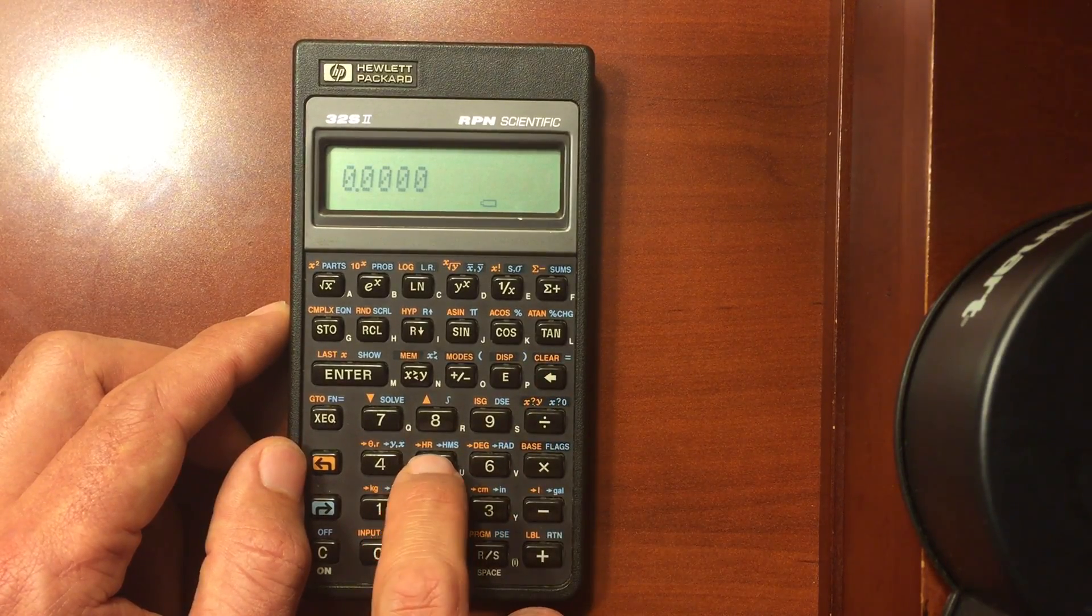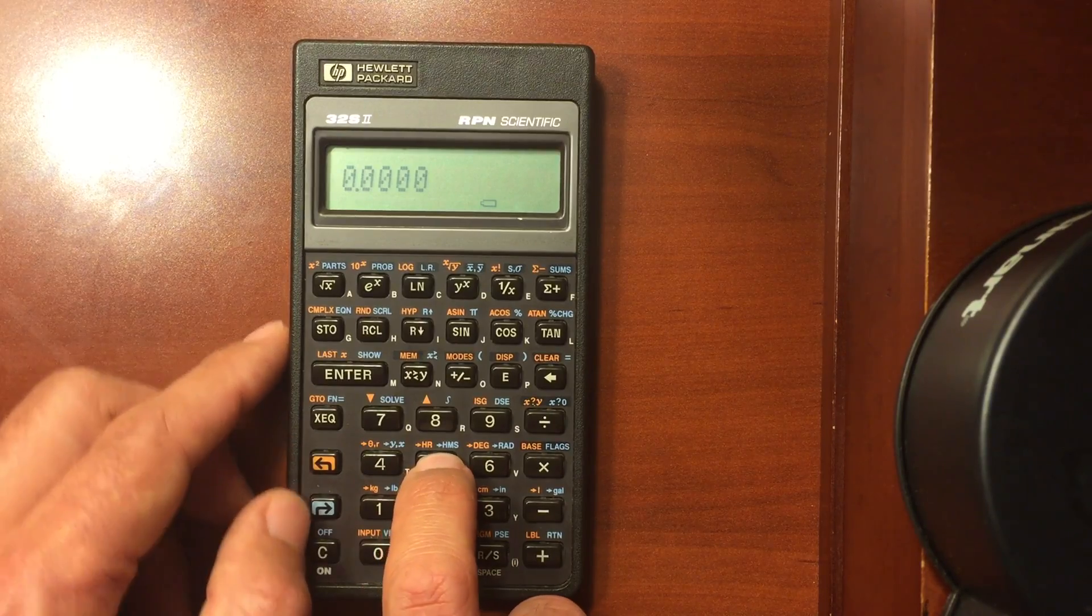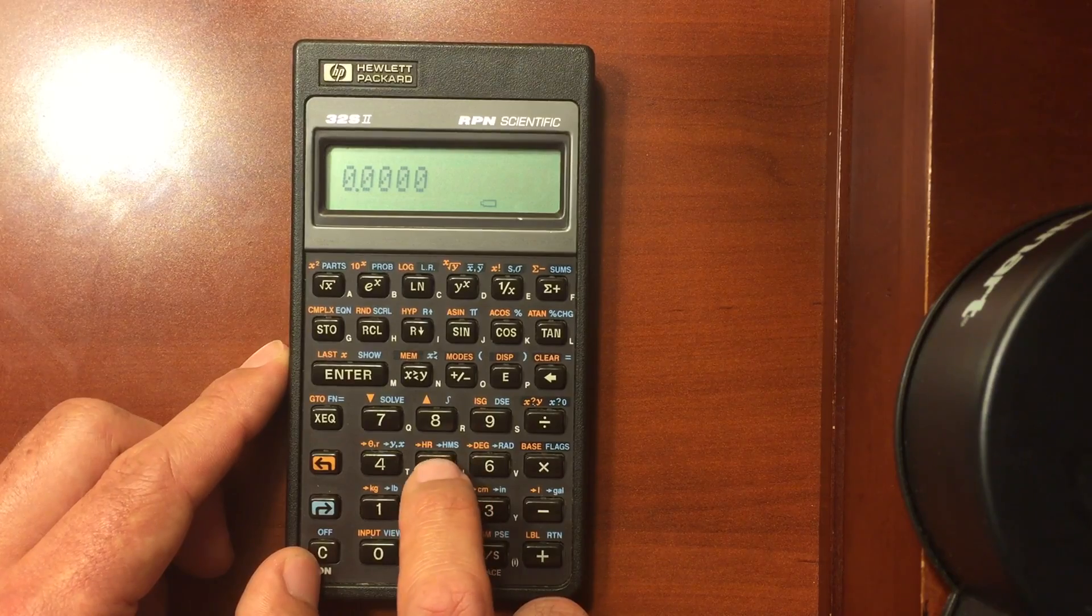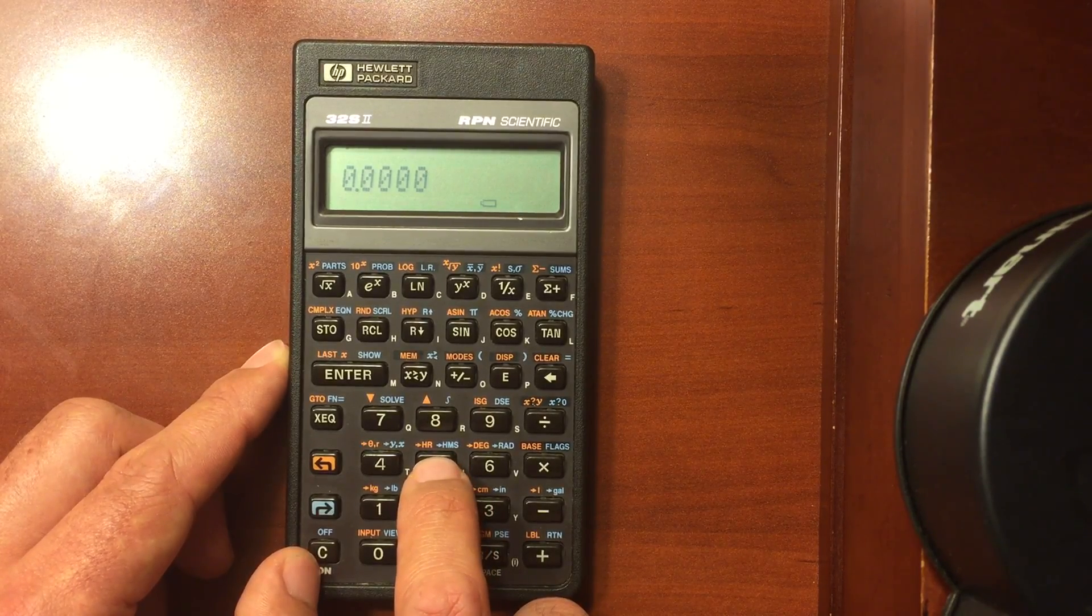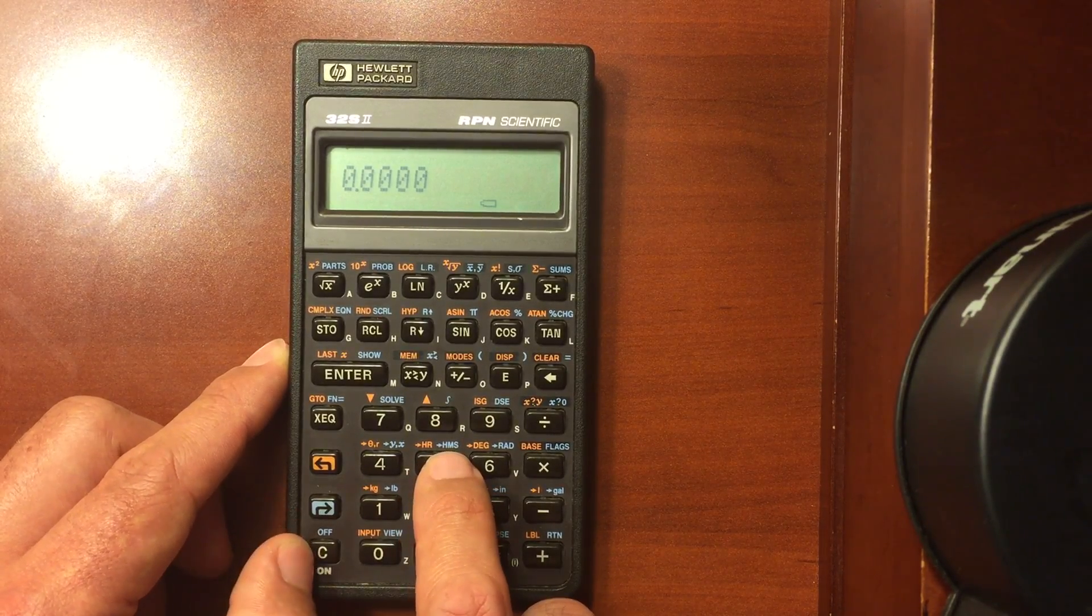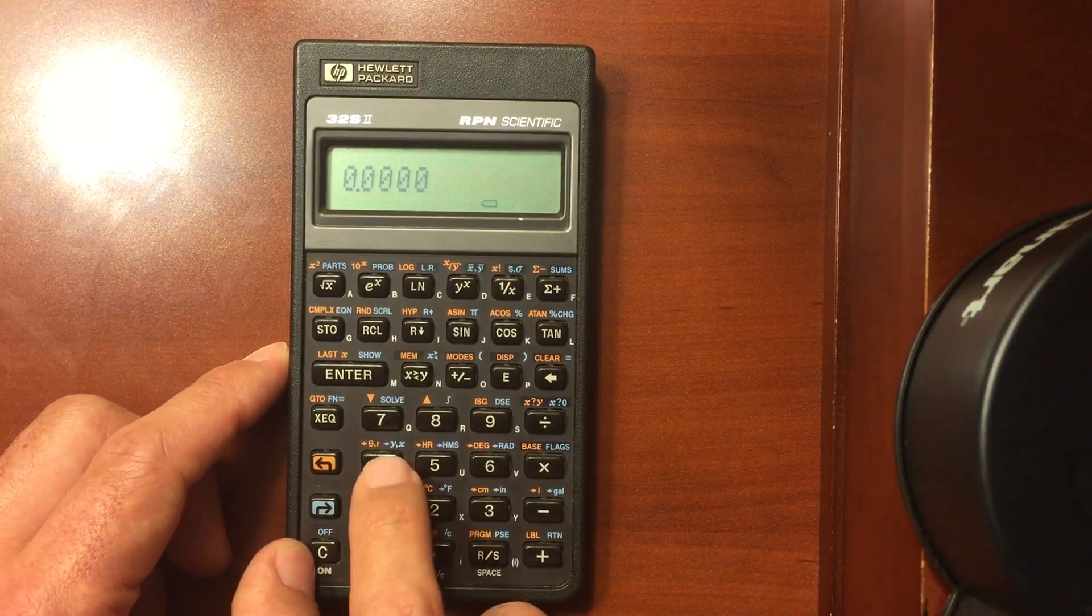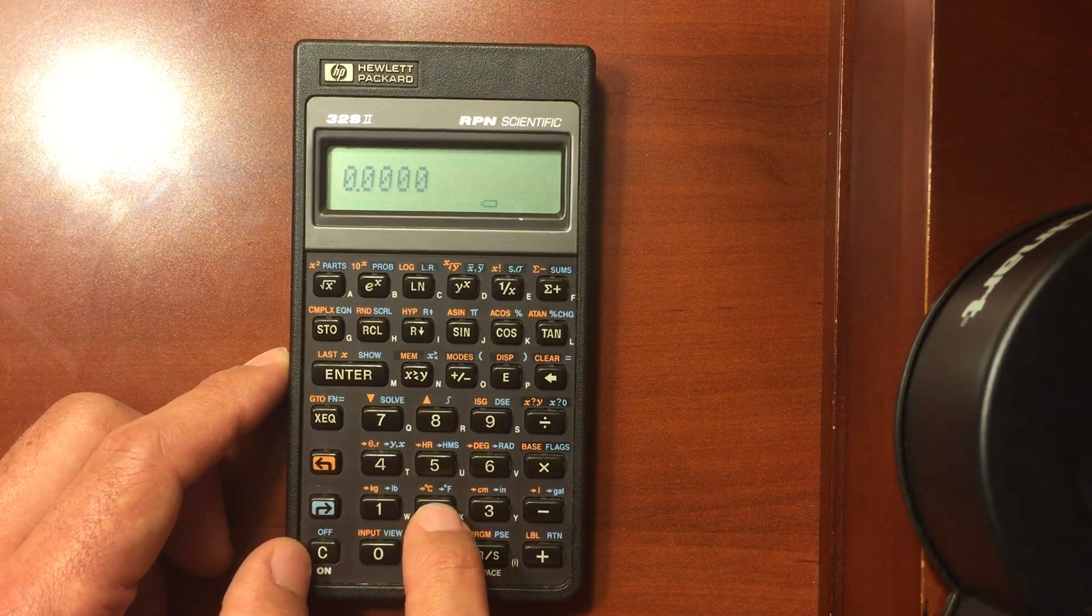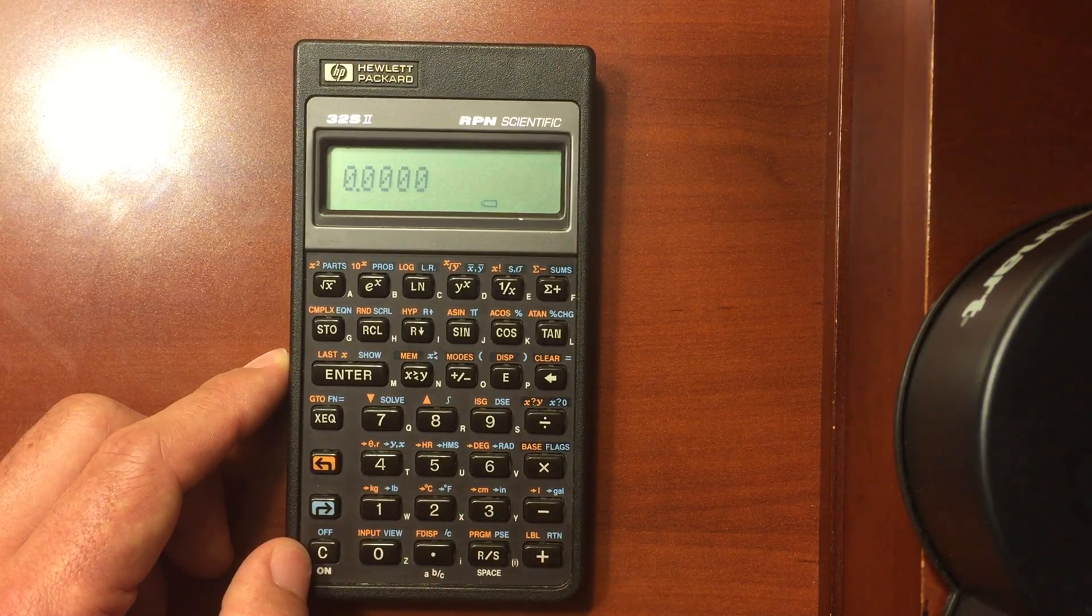And change from hours minutes seconds to hours decimals. Or as I have said before many times, I like to do that for latitude and longitude, to change it from degrees minutes seconds to a decimal format. Rectangular to polar conversions, kilograms to pounds, centigrade to fahrenheit, centimeters to inches, liters to gallons.